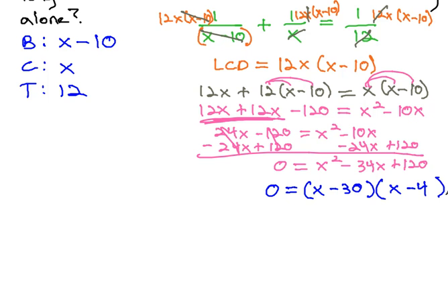Again, if you're not sure, you could have also completed the square at this point or you could have used the quadratic formula. Both those options work. And so when we set each factor equal to zero, x minus 30 equals zero, x minus 4 equals zero.